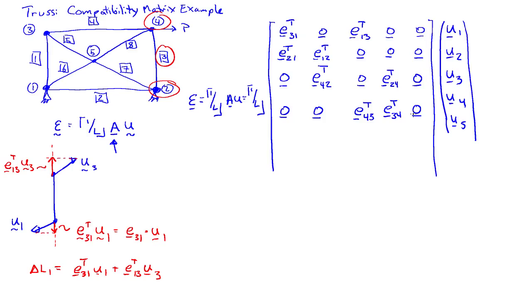And we have to have one row for every bar in the system, so now we're at bar 5. Bar 5 connects nodes 3 and 5. So 0, 0, and then E53 transpose, 0, E35 transpose. So again, it's the outward normals.